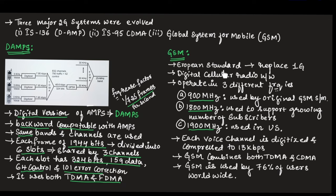GSM is a European standard that replaced first generation. It uses a digital cellular radio network and operated at 3 different frequencies: 900 MHz, 1800 MHz, and 1900 MHz. The 900 MHz frequency is used by the original GSM system. The 1800 MHz frequency is used to support a growing number of subscribers.